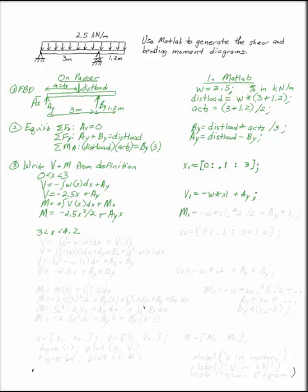So on my first interval, I'm going to code m1 equals minus w times x1 squared divided by 2. When you square something in MATLAB that's a vector, and what I want to do is I'm squaring each particular term, I have to use a period in front of the caret to say x1 squared. Then I can say plus ay times x1.